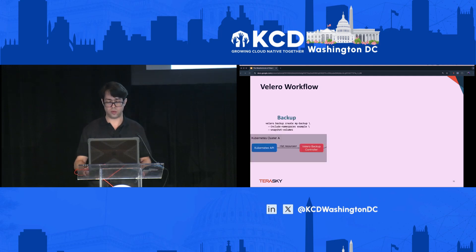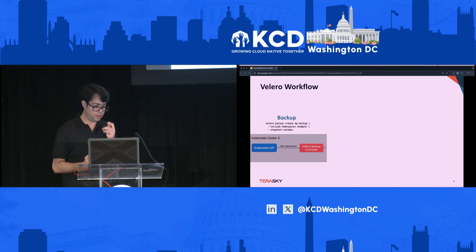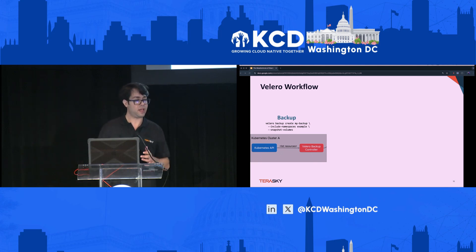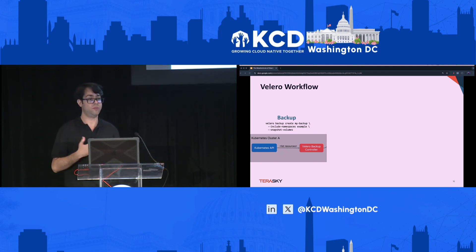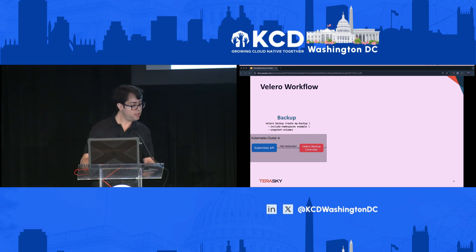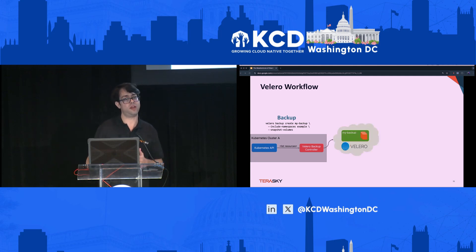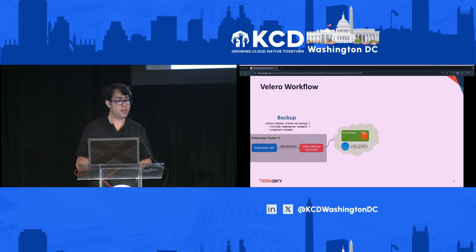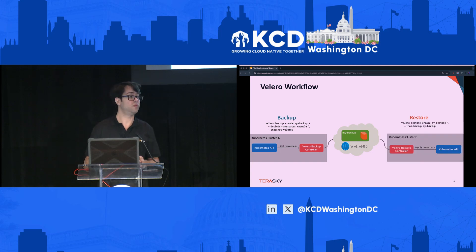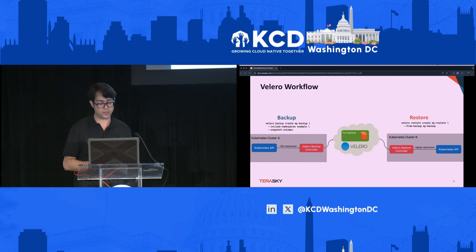Looking at the Velero workflow: they have a CLI. You interact with the Kubernetes API — Velero installs new CRDs as part of its operation. You run a command to create a backup, specifying which namespaces you want to include and whether to snapshot volumes. Behind the scenes, Velero has a Kubernetes operator that spins up in your cluster, performs the backup, takes the snapshot, and copies it into your blob storage. When you need to do a restore, you use the CLI on the DR cluster side to restore the data.